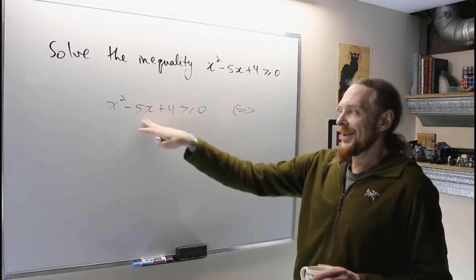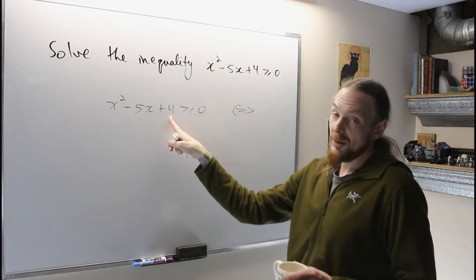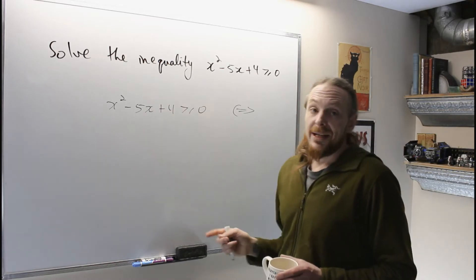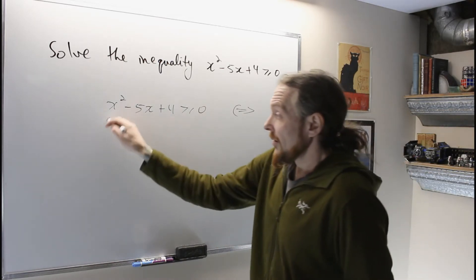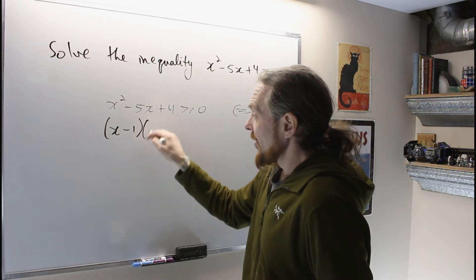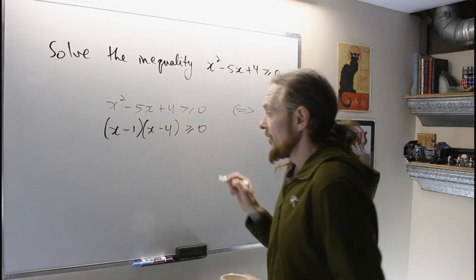So we're going to play the game which multiplies, two numbers multiply to give me 4 and add to give me negative 5. That's correct, negative 4 and negative 1. So this is x minus 1 times x minus 4 is greater than or equal to 0.